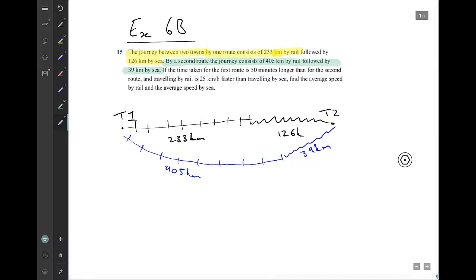Okay, now the next part talks about time taken for the first route is 15 minutes longer than for the second route. Immediately, alarm bells should be going off whenever you see minutes, because very rarely will we have speed in terms of minutes. So straight away convert that into 5 on 6 hours.